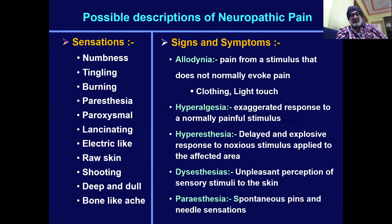The signs and symptoms are very classical of neuropathic pain. Allodynia is where pain arises from a stimulus that does not normally evoke pain — for example, putting on clothing or even a light touch can cause severe pain. Hyperalgesia is where there is an exaggerated response to a normally painful stimulus. There may also be hyperesthesia or dysaesthesia where normal touch sensations go haywire.